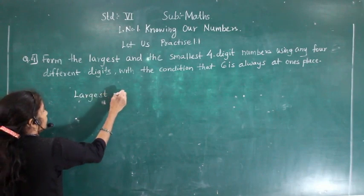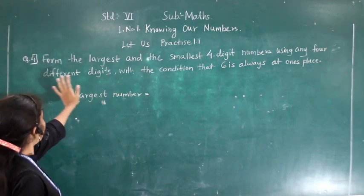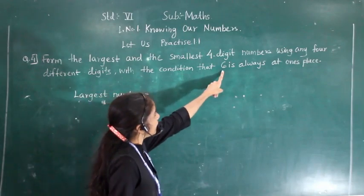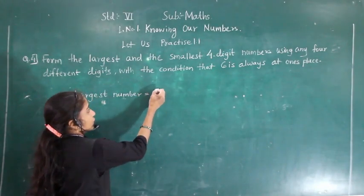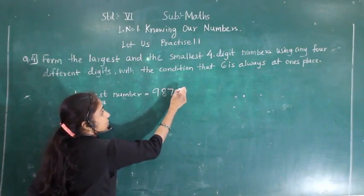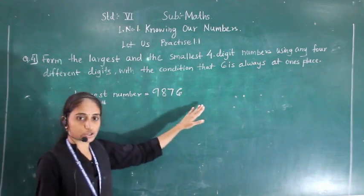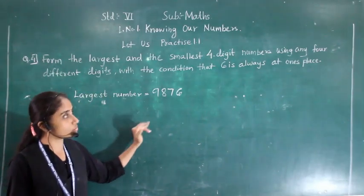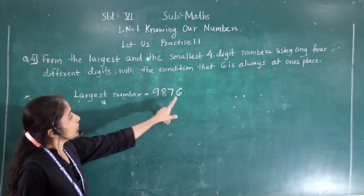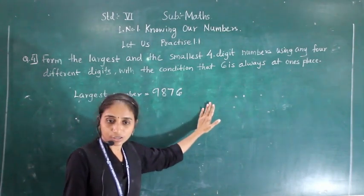For the largest number, we have to use 4 different digits. The greatest digit is 9, then we use 8, 7, and 6 — with 6 at the ones place. So 9876 is the largest number, because the condition given is that all digits should be different, and we have written all different digits here.